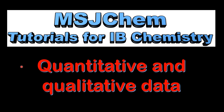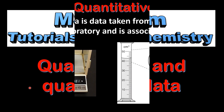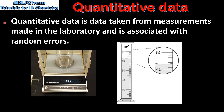This is MSJChem. In this video I'll be looking at quantitative and qualitative data. Quantitative data is data taken from measurements made in the laboratory and is associated with random errors.